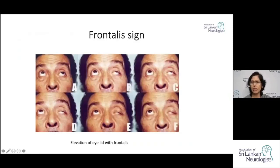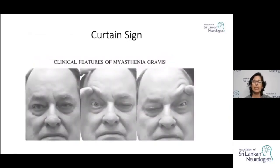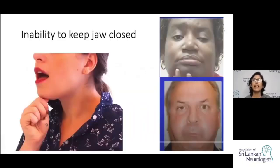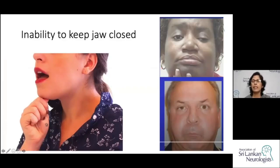An interesting clinical sign is the frontalis sign — wrinkling of the forehead and elevation of the eyebrows to compensate for ptosis. Another sign described in myasthenia gravis is that attempting to manually open one ptotic eye may worsen ptosis in the other. Neck extensors may also weaken, causing head drop, and jaw weakness may make it difficult to keep the mouth closed.